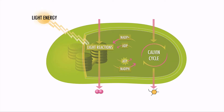Photosynthesis uses light energy, water, and carbon dioxide in two processes to ultimately produce energy molecules like glucose or building molecules like cellulose. Oxygen is a byproduct of the light-dependent reaction, and the ATP and NADPH that are made in the light-dependent reaction fuel the light-independent reaction, or Calvin cycle.